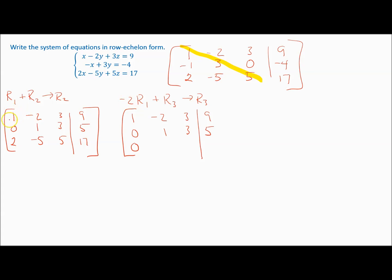Continuing row 3 computation with negative 2 × row 1 + row 3: second position: negative 2 times negative 2 is 4, plus negative 5 is negative 1. Third position: negative 2 times 3 is negative 6, plus 5 is negative 1. Constants column: negative 2 times 9 is negative 18, plus 17 is negative 1. New row 3: 0, negative 1, negative 1, | negative 1.